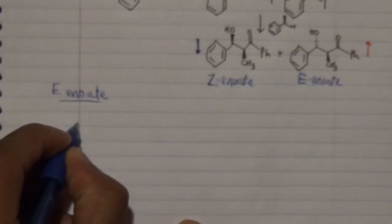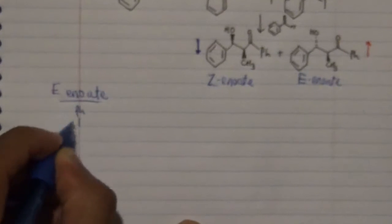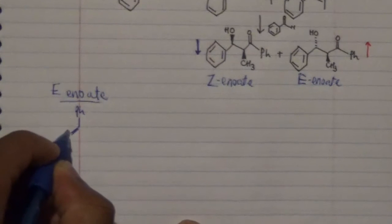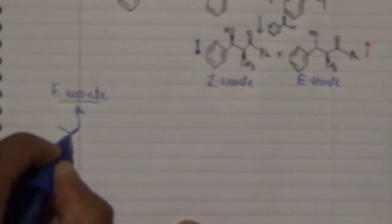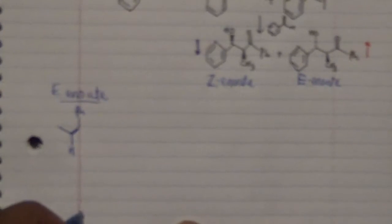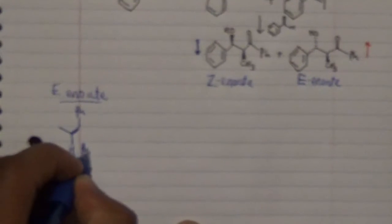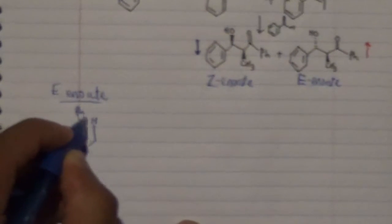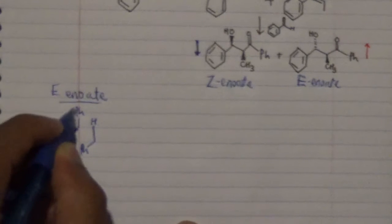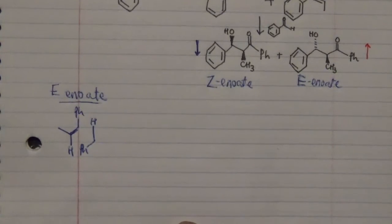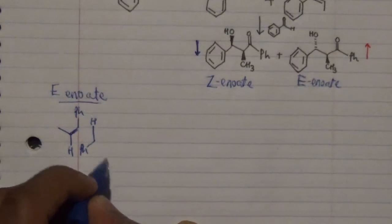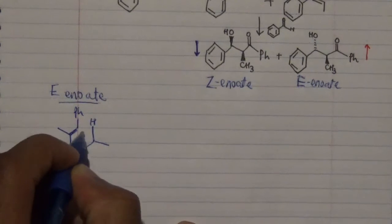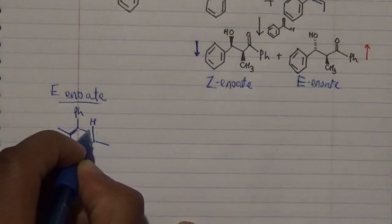For the favored E-enolate transition state, we have a phenyl group at the top with a double bond attached to a methyl group, and hydrogen pointing downward. On the other side, we have a phenyl attached to a carbon with a hydrogen. There are no sterics — the phenyls are pointing in the anti-direction to each other — and then we have the aldehyde on one side and the ketone group on the other, with the oxygen present.